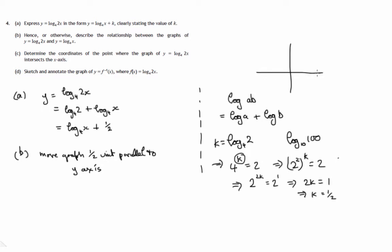So graph of y equals log to the base 4 of x plus a half would be move graph 1 half unit parallel to the y axis. If we have, for instance, some graph y equals f of x, if we add a half to that, the whole graph just slides up half a unit.